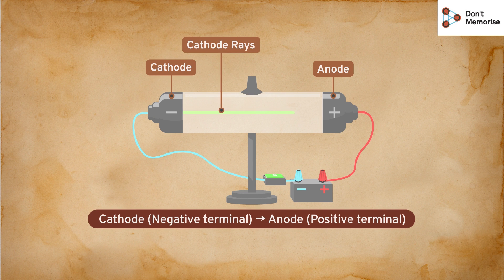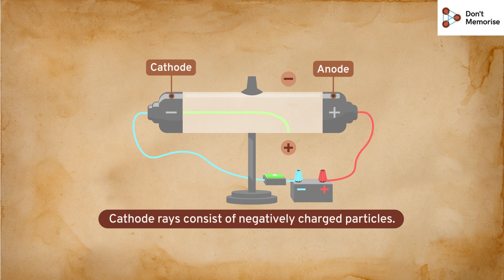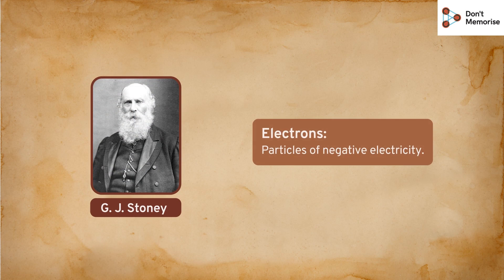To study the properties of these cathode rays, JJ Thomson conducted a few different tests. He applied an electric field and observed that the rays changed their path under its influence. They showed deflection away from the negative charge. This led to the conclusion that the cathode rays consist of negatively charged particles.